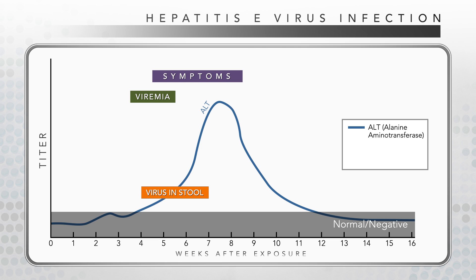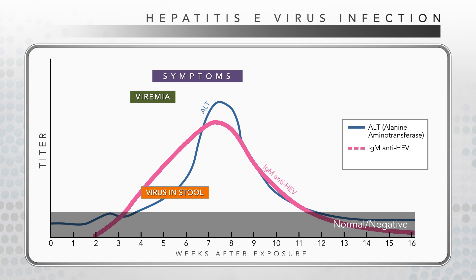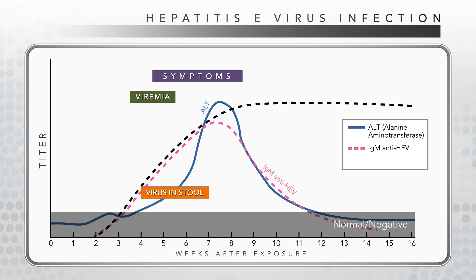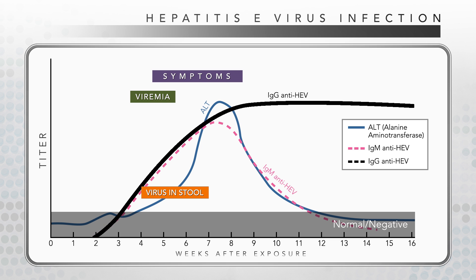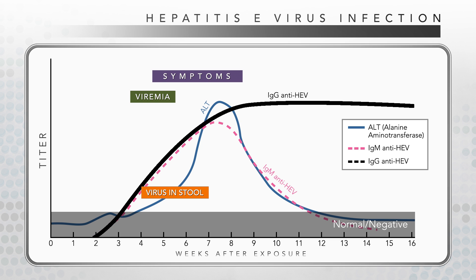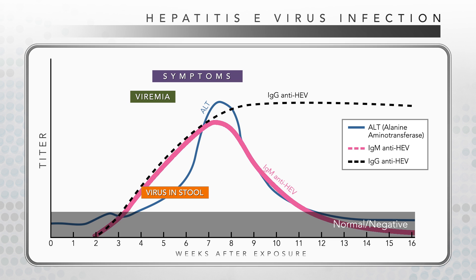Antibodies to HEV, both IgM anti-HEV, depicted by the pink hatched line, and IgG anti-HEV, illustrated by the black hatched line, are usually positive about three to four weeks after exposure. IgG anti-HEV persists, but IgM anti-HEV declines rapidly during early convalescence and is usually negative by 13 weeks.